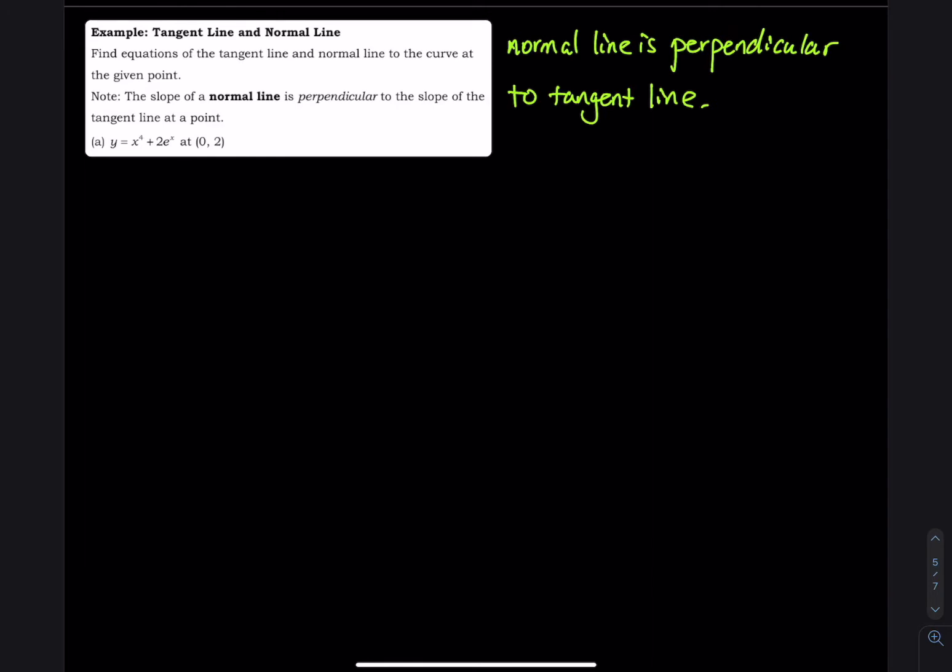So what is perpendicular? Perpendicular means, so let's say the slope of a tangent line is equal to 2. What is perpendicular? Perpendicular means negative reciprocal.